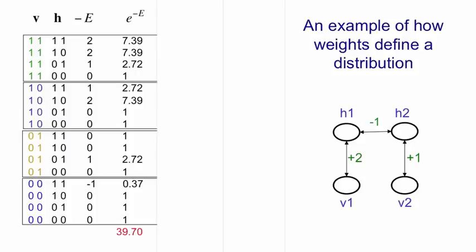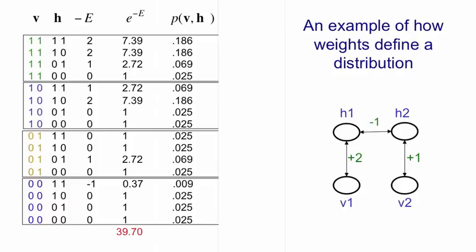If we add all those up to get 39.7 and then we divide everything by 39.7, we get the probabilities of joint configurations. There they all are.